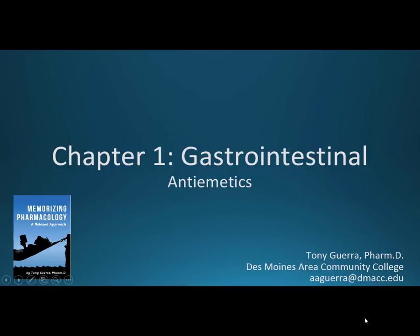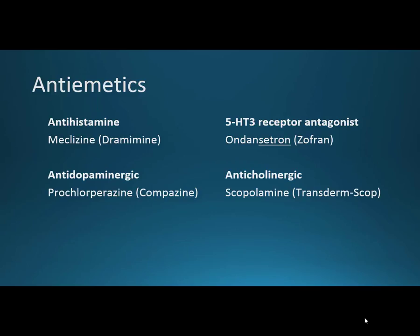This is Chapter 1: Gastrointestinal, and in this video we'll be discussing antiemetics. Antiemetic means anti-nausea or vomiting. The main neurotransmitters that are targeted with controlling nausea are dopamine, serotonin, histamine, and muscarinic receptors, which are in the parasympathetic nervous system.